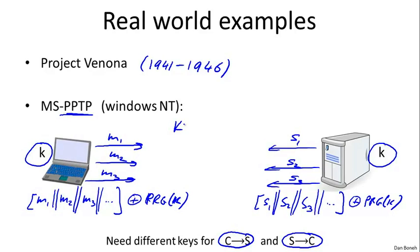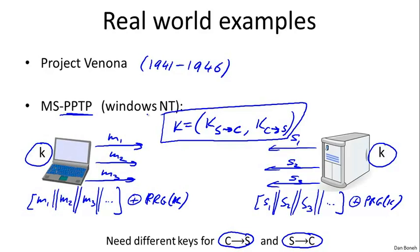One key is used to encrypt messages from server to client, and one key is used to encrypt messages from client to server. So these are two separate keys that are used, and both sides of course know this key. So both sides have this pair of keys.